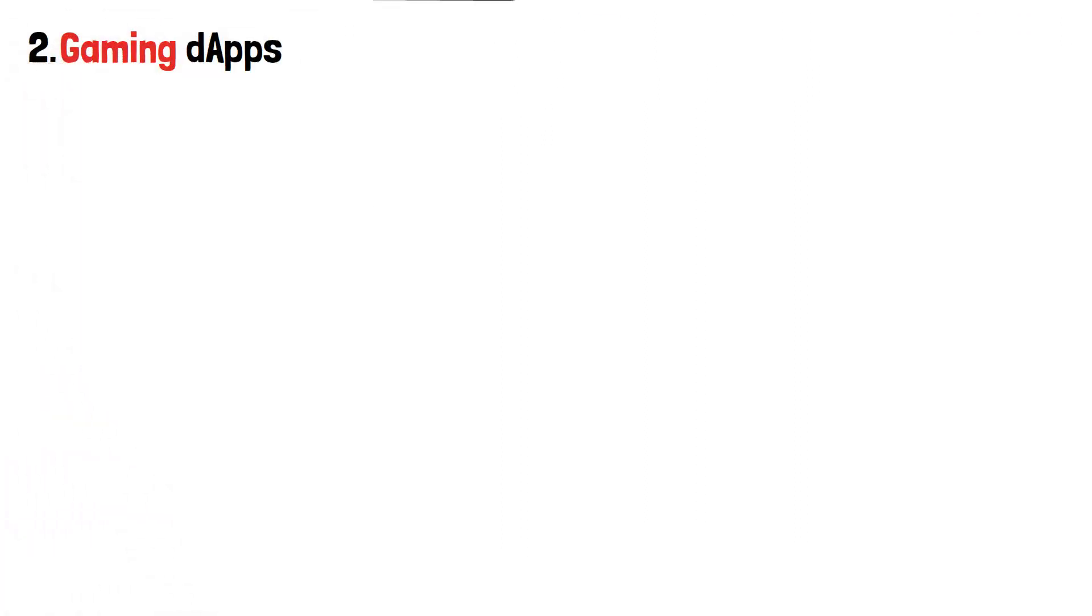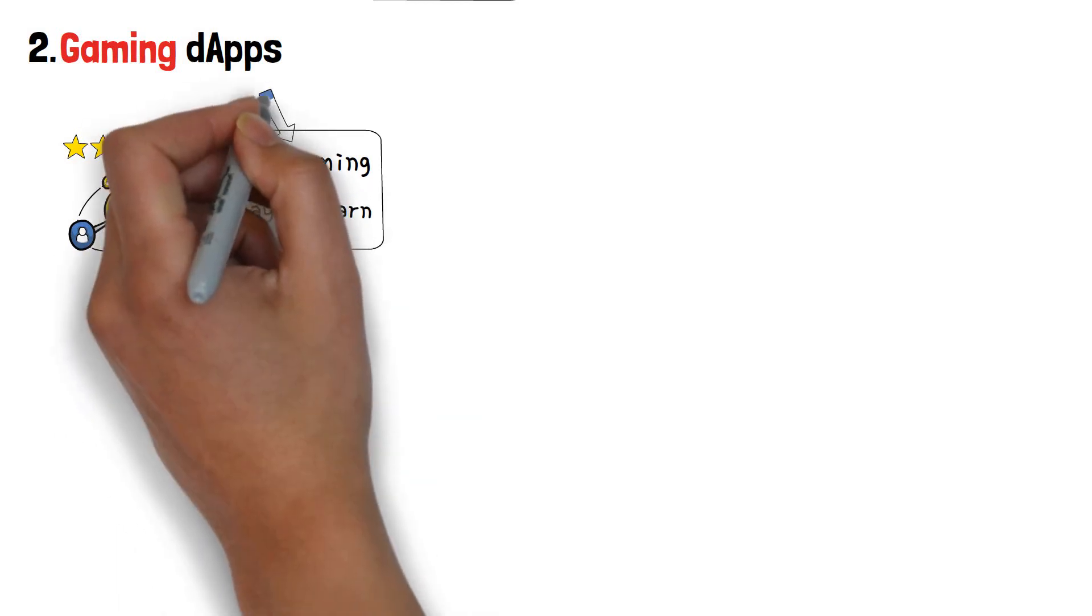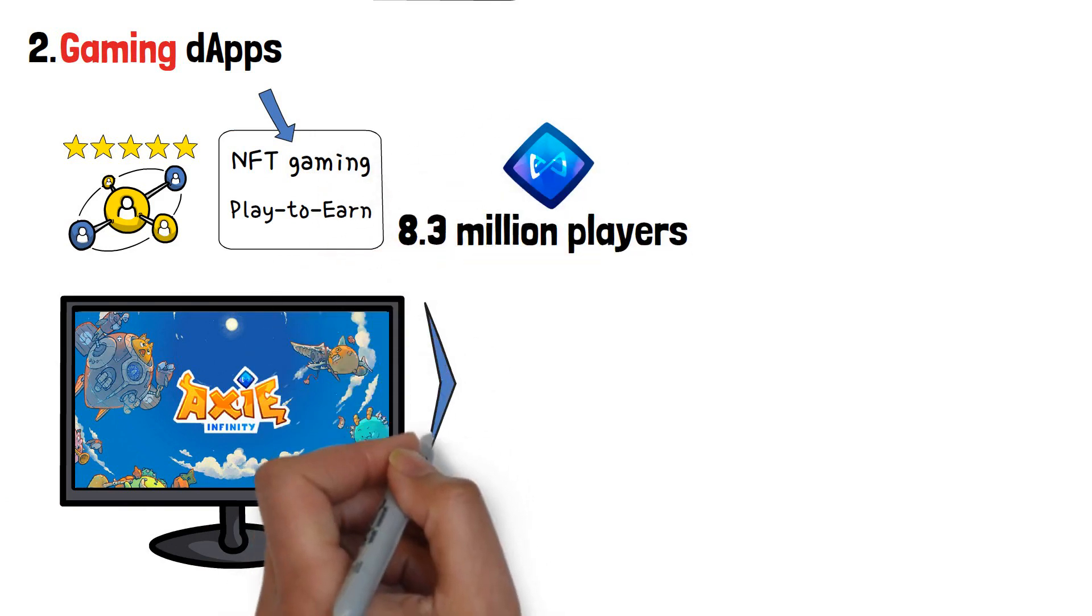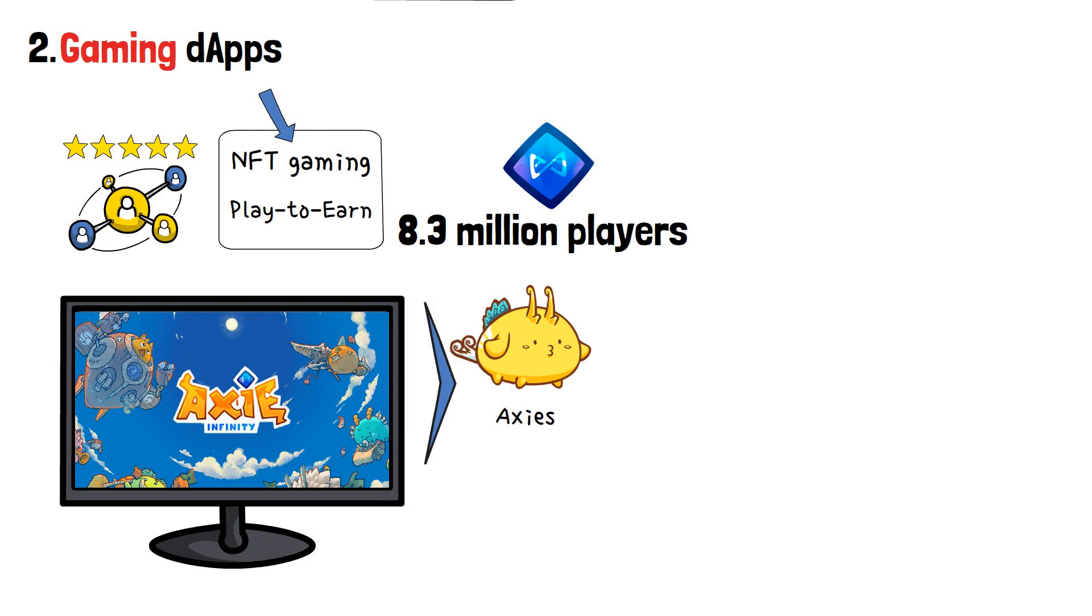First up, gaming dApps. Without a doubt, these are some of the most popular decentralized applications that have come out of the industry. If you've heard about NFT gaming, or play-to-earn games, most of them can be considered dApps. Think about Axie Infinity, one of the most popular cryptocurrency games on the market. Within the game, you breed and grow creatures called Axies, battle other players, and are able to sell your Axie pets for real-world profits.